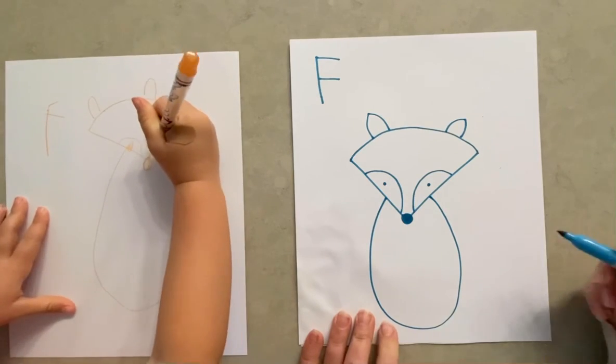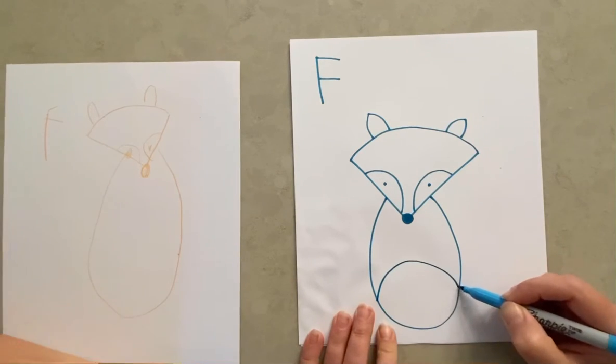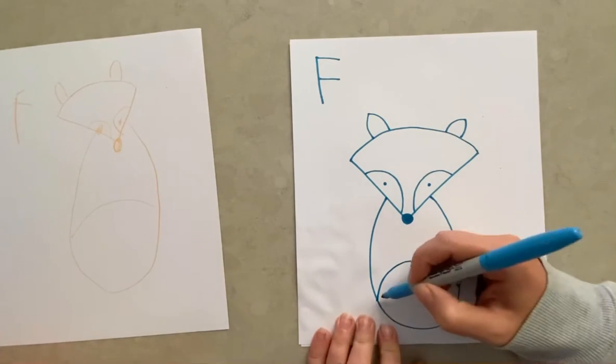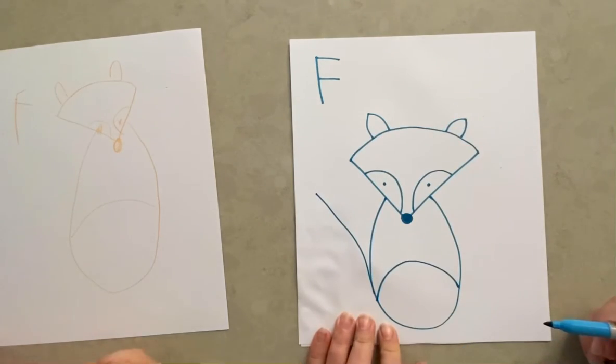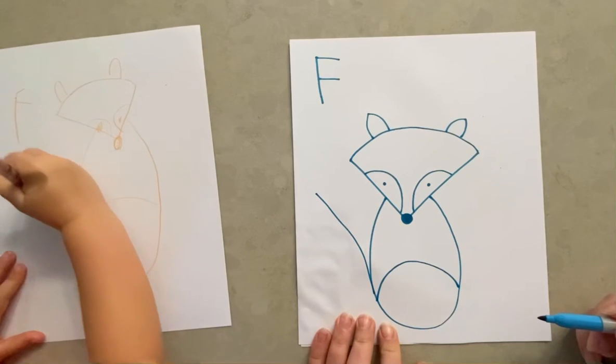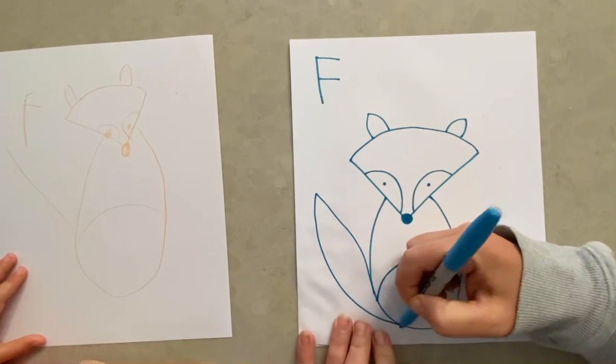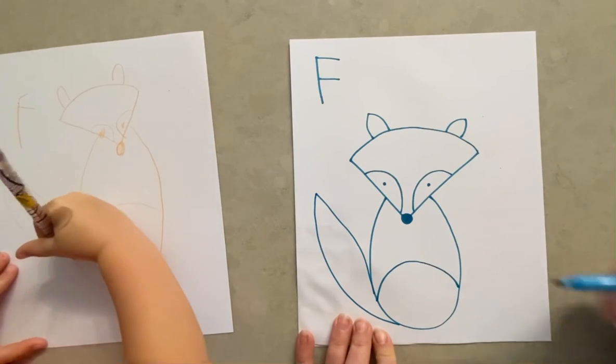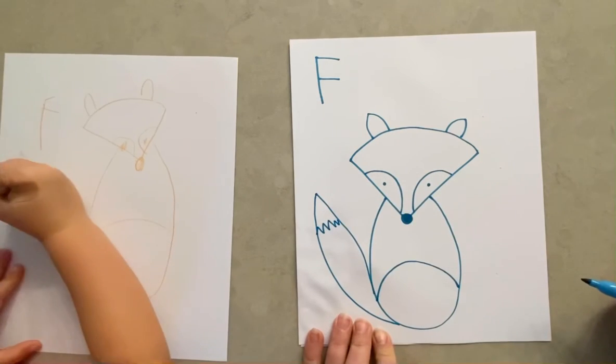Nice. And we're going to give him a little patch white part on his belly. And down the side we're going to go up for one side of his tail, and we're going to come down the other side of his tail. And then we're going to do a little spike at the top of his tail because he has white at the end of his tail.